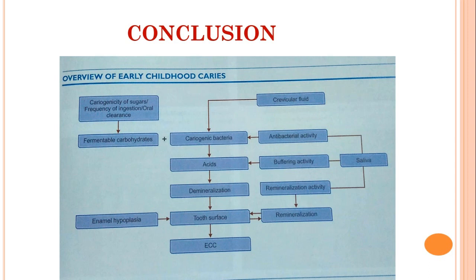Regarding the cariogenicity of sugar — we have the substrate fermentable carbohydrates and the pathogen Streptococcus mutans, which produce acid. If this cannot be buffered by salivary antibacterial and buffering activity, and remineralization cannot take place at the rate of demineralization, the tooth surface will be gradually demineralized, resulting in early childhood caries. The better we diagnose and provide proper treatment, the less tooth structure will be lost and the better the prognosis.